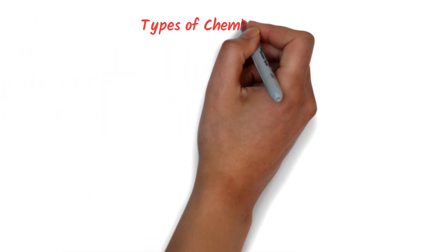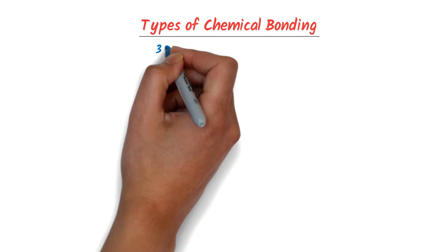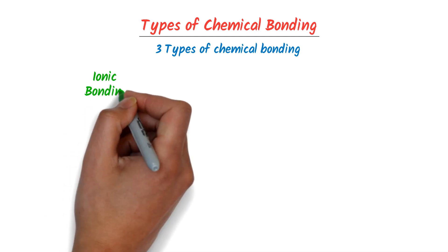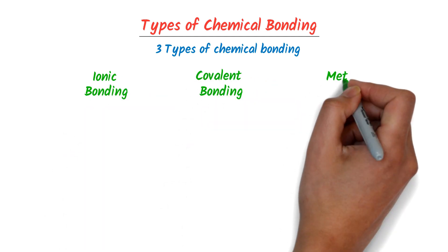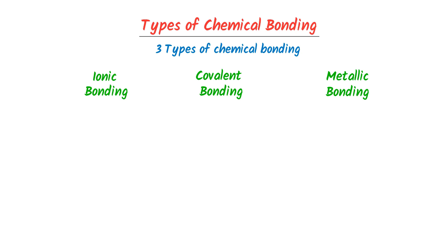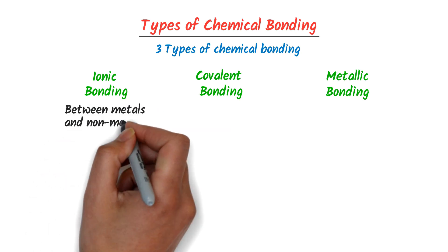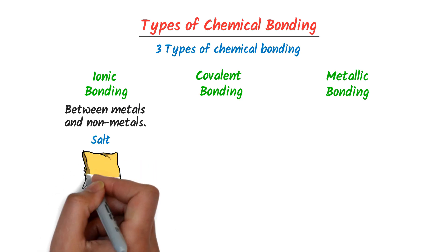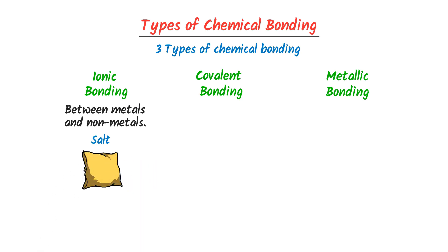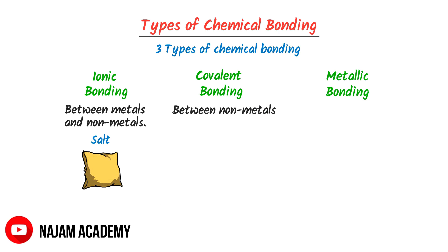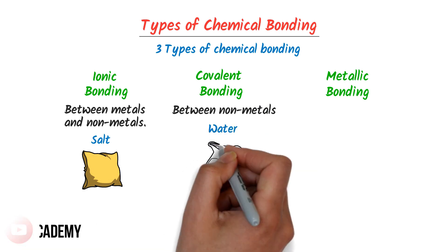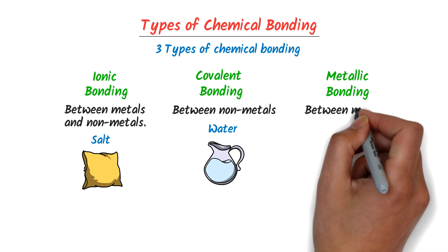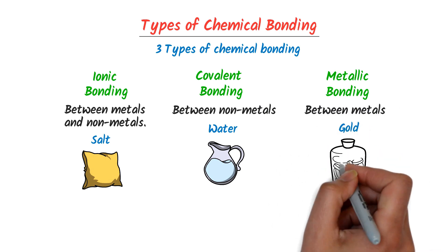Now let me teach you the types of chemical bonding. There are mainly three types: ionic bonding, covalent bonding, and metallic bonding. Ionic bonding exists between metals and non-metals — for example, table salt, sodium chloride. Covalent bonding exists between non-metals and non-metals, like water, H2O. And metallic bonding exists between metals like gold, iron, etc.